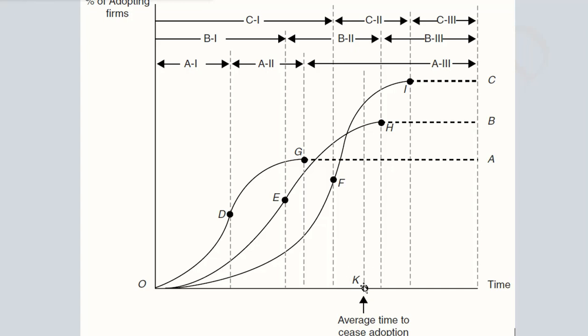Another thing to understand in this whole diagram is this point K. This point K is actually showing the average time to cease adoption. Because for firm A, this is the stage or point where adoption is ceasing. And for firm B, this is the point where adoption is ceasing. And for firm C, this is the point where adoption is ceasing. So if we take the average of the three, it is going to be somewhere here. So this is that point which is showing the average time to cease the adoption.